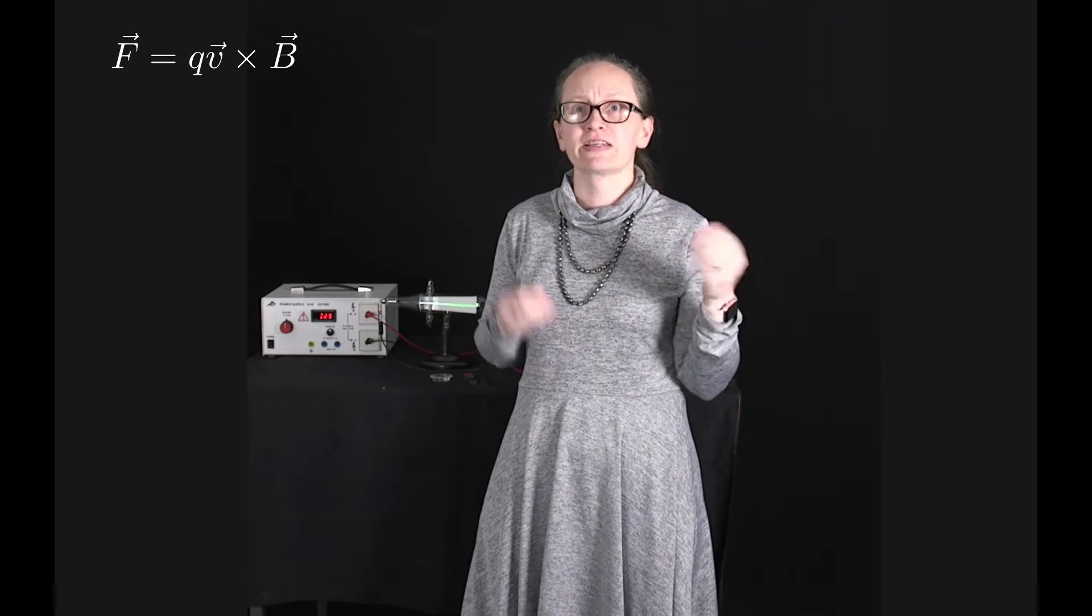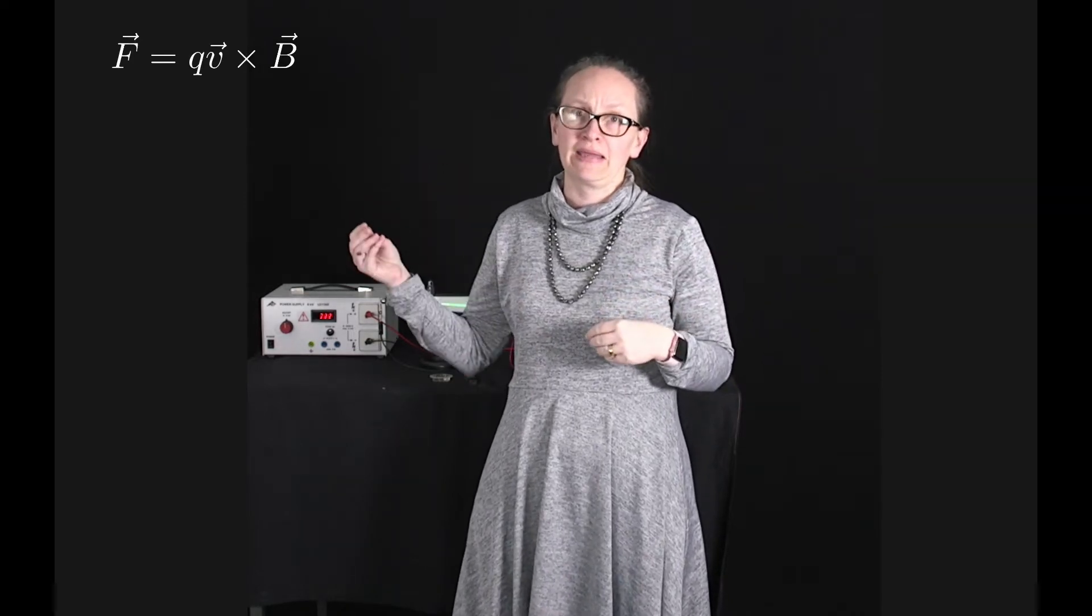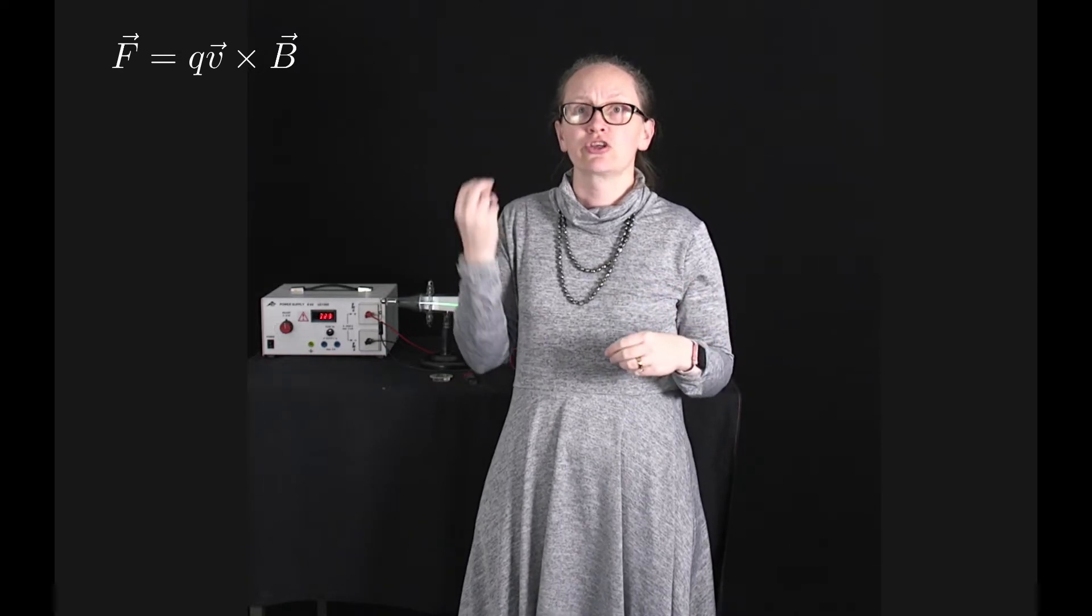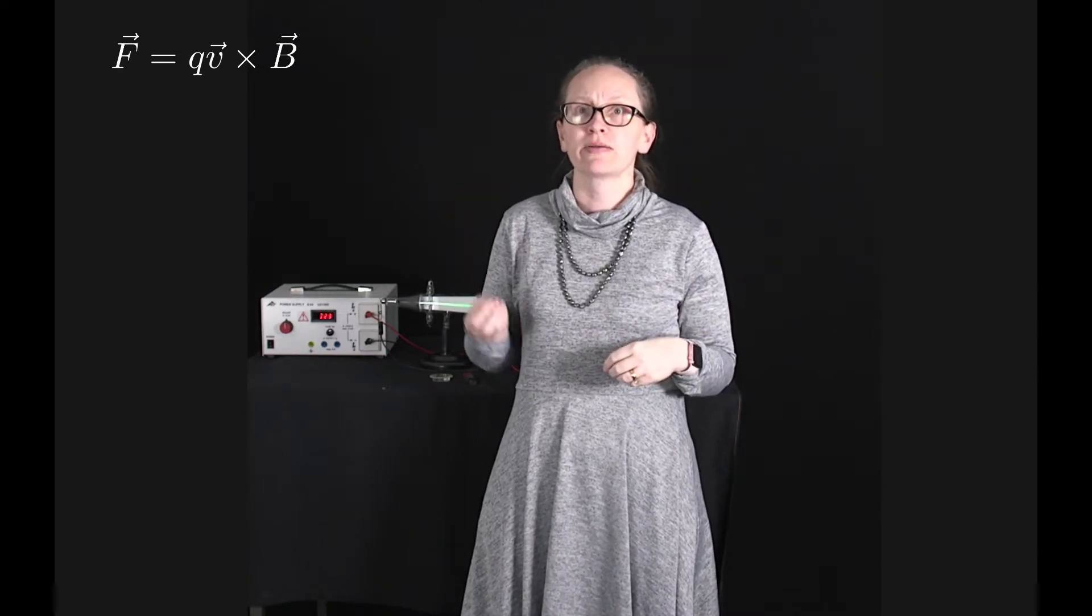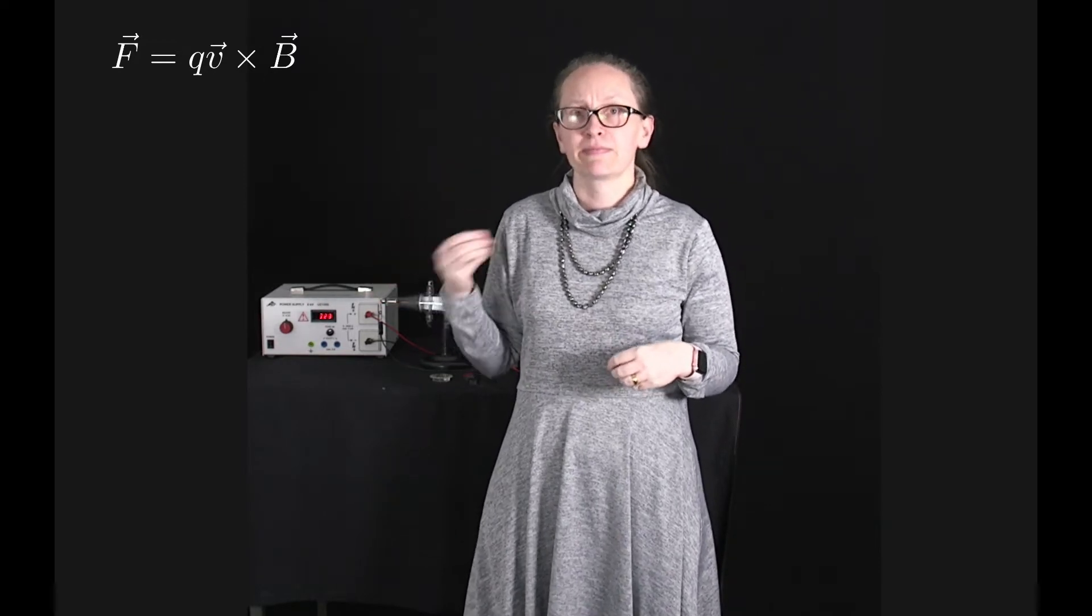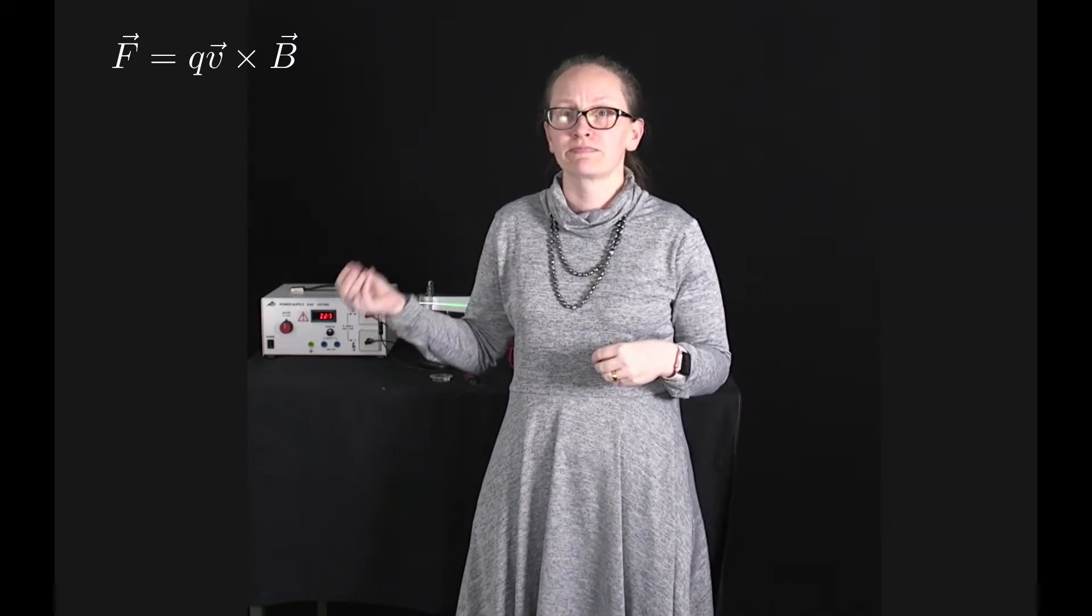So a moving charged particle in a magnetic field feels a force described by the equation F equals QV cross B. In this equation, F is the force measured in newtons, Q is the charge measured in coulombs, V is the velocity measured in meters per second, and B is the magnetic field strength measured in teslas.